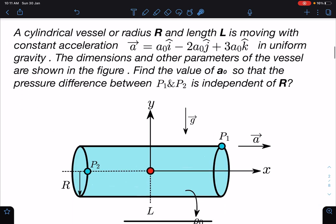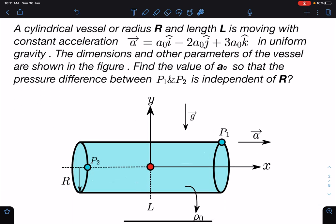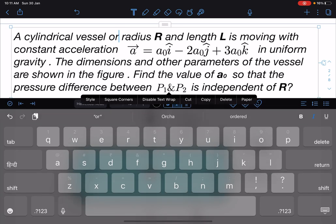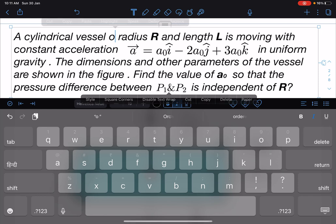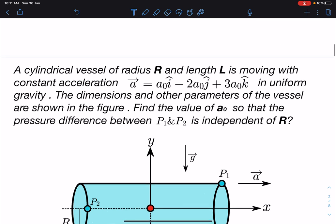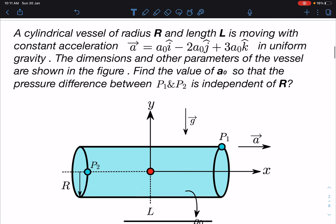So here is the problem statement: A cylindrical vessel of radius R and length L is moving with constant acceleration vector a = a₀î - 2a₀ĵ + 3a₀k̂ in uniform gravity.